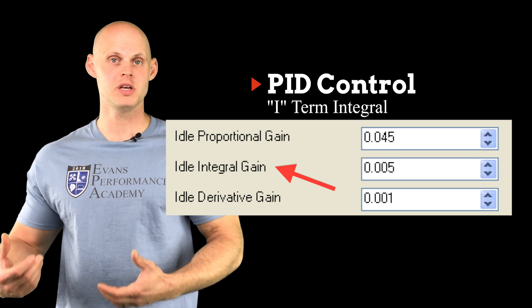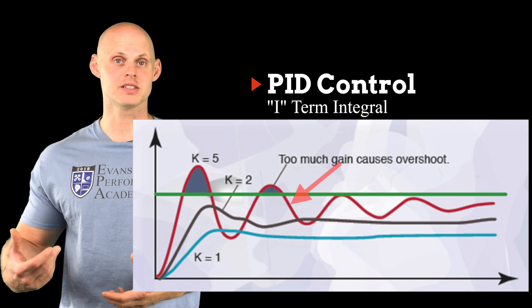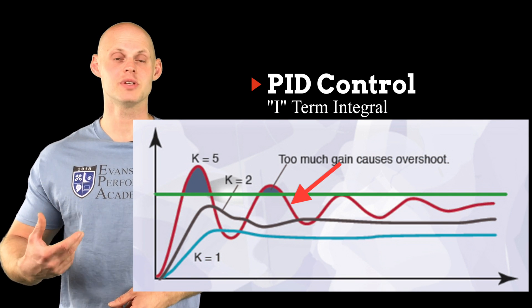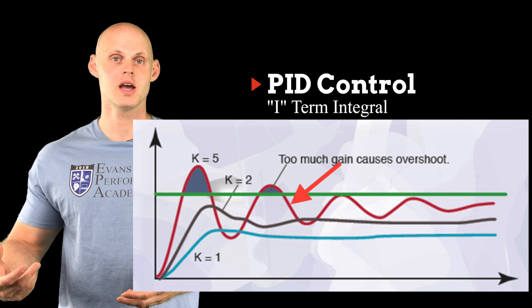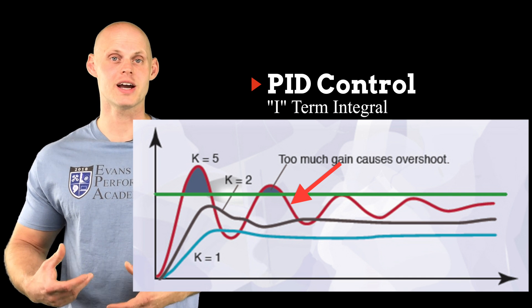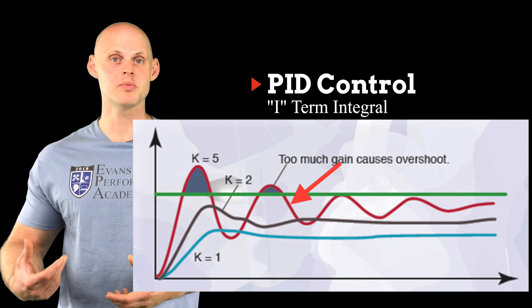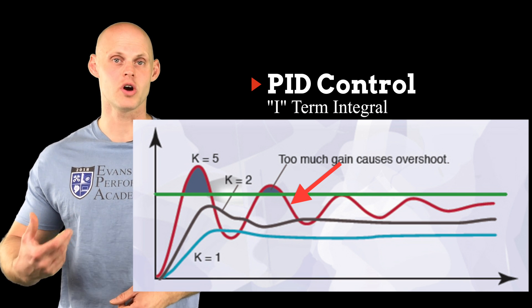Now, we know with our P term being too aggressive, we can get that rippling or oscillation effect when we're running up to that target over the long term. We're going to be using this I term to go in and actually dampen out that oscillation or the rippling and make it track right to the target value.